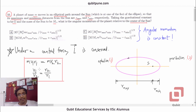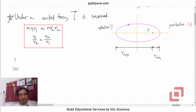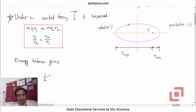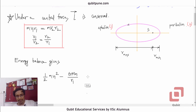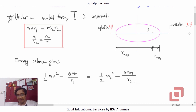Next, there are no dissipative forces in the system, so energy is also conserved. Energy balance gives us: kinetic energy at aphelion, ½M·V1², plus potential energy −G·M_s·m/R1, equals ½M·V2² minus G·M_s·m/R2, where capital M is the mass of the sun.